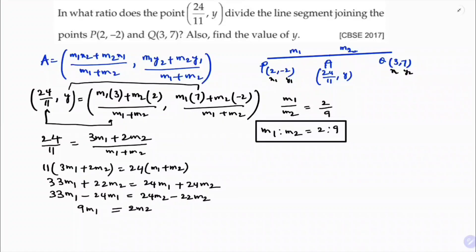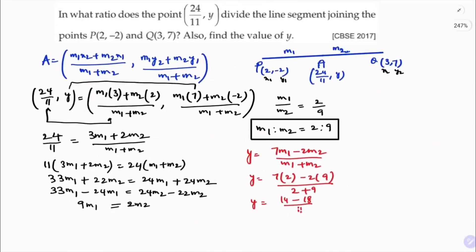Now we need to find y. So ordinate: y equals 7m1 minus 2m2 by m1 plus m2. That's 7 times 2 minus 2 times 9, because m1:m2 ratio is 2 is to 9. So 2 plus 9 is 11. 14 minus 18 by 11, which is nothing but minus 4 by 11. So y equals minus 4 by 11, and the ratio is 2 is to 9.